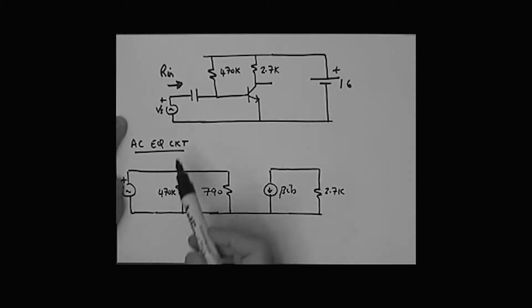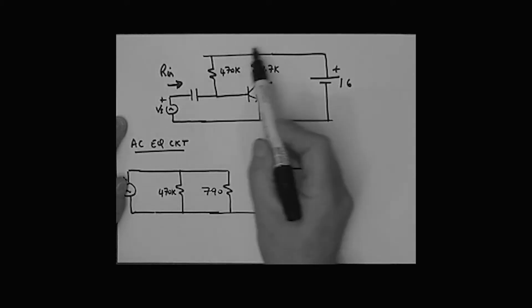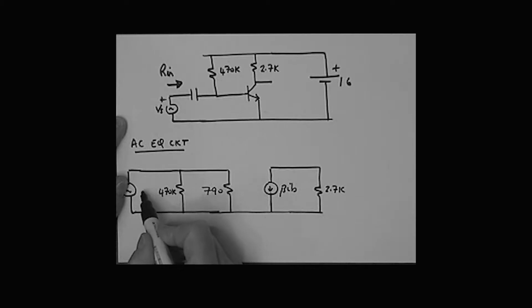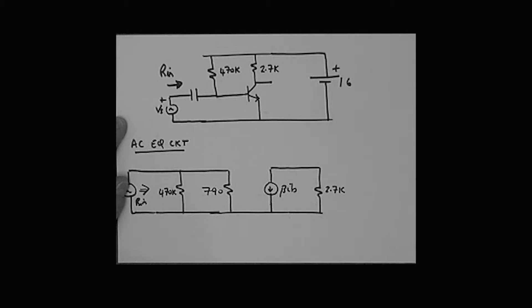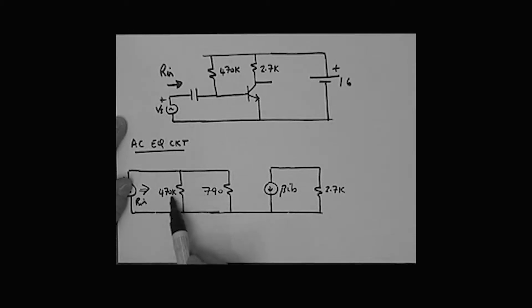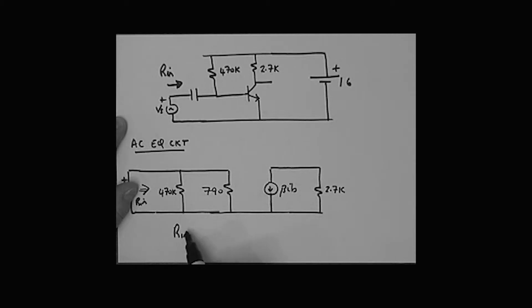Let's transfer that information over to our AC equivalent circuit for that amplifier. Here is our signal source - what we're asking is simply: what's the resistance as I look in here? That is the R_in resistance. In this particular case, it's not very hard - it's a very easy calculation. As I look in here, I see a 470k resistor in parallel with the beta·r_e of the transistor, which is a 790 ohm AC resistance.